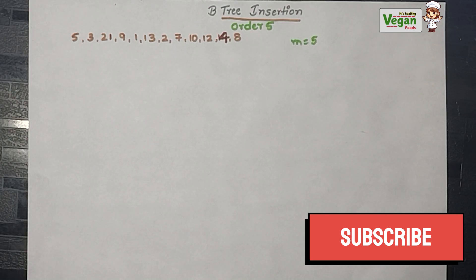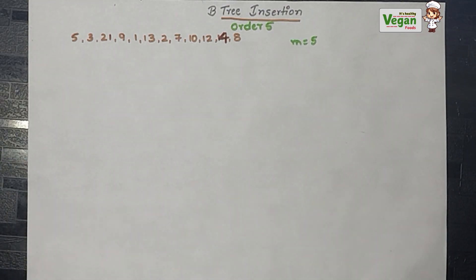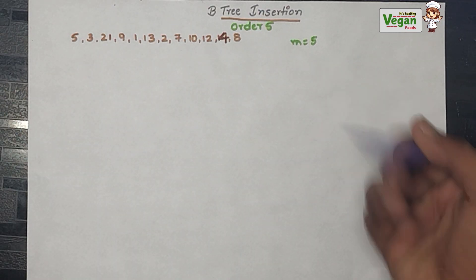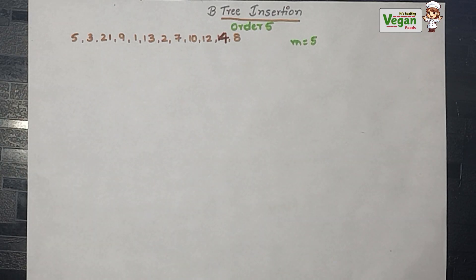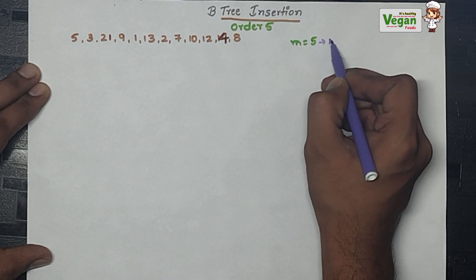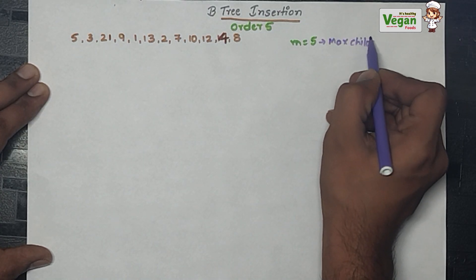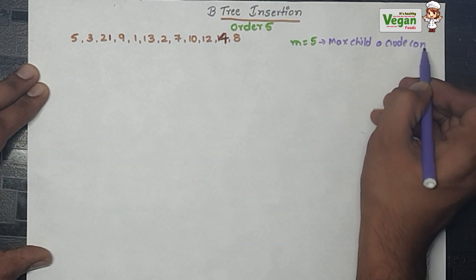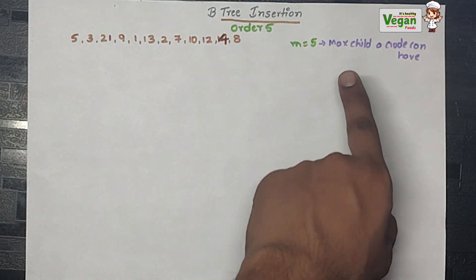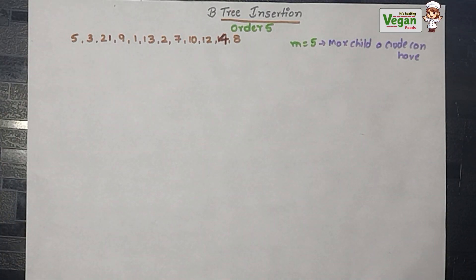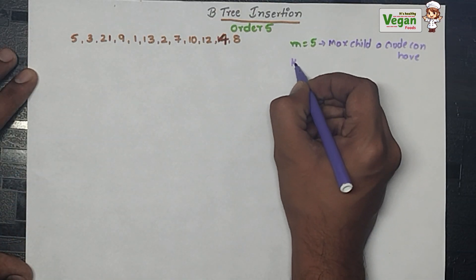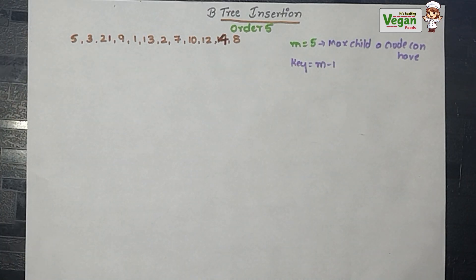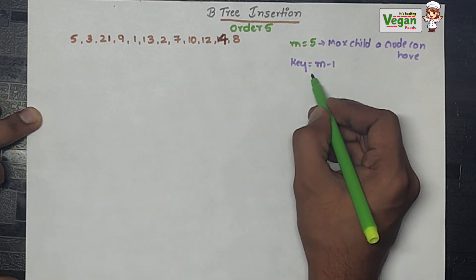In this video let's discuss B-tree insertion of order 5. The value of m will be equal to 5. What m equals 5 represents is the maximum number of children a node can have. Now we must find the value of key, so key value will be equal to m minus 1. m value equals the order value, so 5 minus 1.